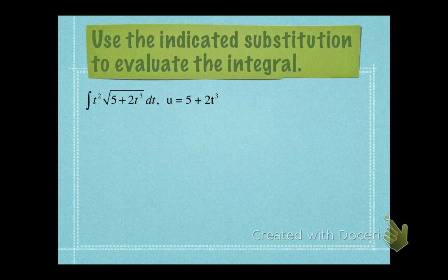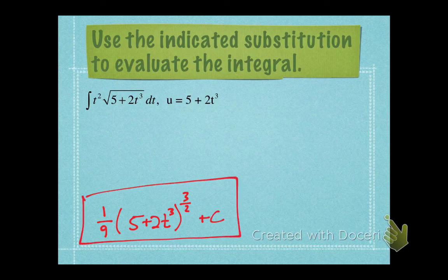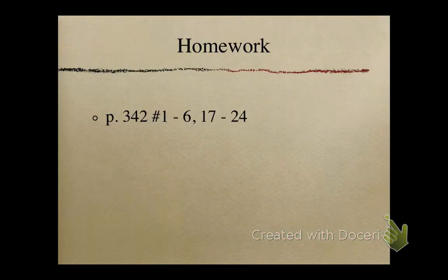There's one more example here. I'm just going to write down the final answer and let you see if you can do this u-substitution correctly. The final answer is 1/9 times (5 plus 2t cubed) to the power of 3/2 plus c. That's the end of the notes for Section 7.2 Day 1. Thank you for watching.